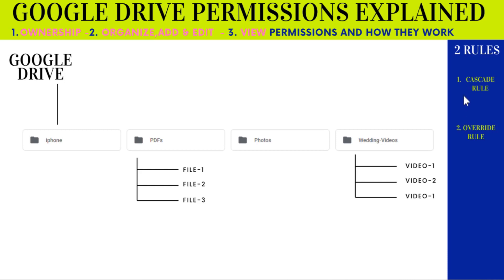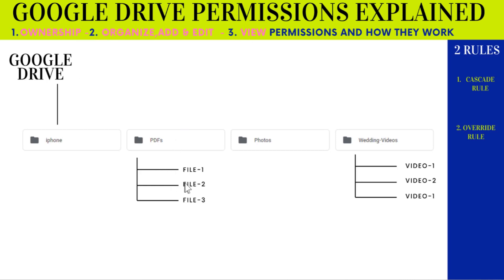These two rules are common sense, and even if you don't know them, most of you will understand how permissions work. But before I show you how to assign permissions, I wanted to highlight these rules. The first rule is called the cascade rule, and it means that if you assign any permission to a folder, the same permission will be transferred to all the files inside that folder, or even if there is another folder inside, the same permission transfers to that folder as well.